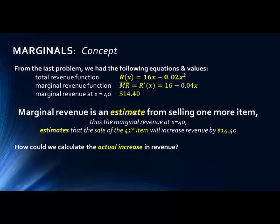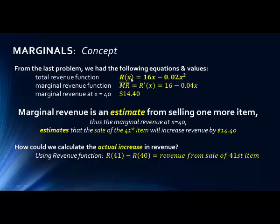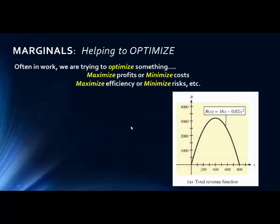To find the actual increase in revenue — not the estimate — we calculate R(41) minus R(40), which gives $14.38. Our estimate of $14.40 is only off by two cents. The reason we use marginals is that they give businesses a good instantaneous estimate of how things are changing, saving many calculations compared to evaluating the full formula repeatedly.